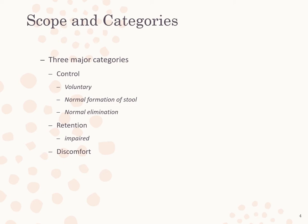Blood enters the kidney through the renal artery, which branches into progressively smaller arteries, arterioles, and finally a cluster of capillaries known as the glomerulus. The glomerulus is a semi-permeable membrane that filters blood into the Bowman's capsule, beginning urine formation. This filtrate contains water, electrolytes, and waste. As it passes through the proximal convoluted tubule, the loop of Henle, and the distal convoluted tubule, surrounding capillaries reabsorb most of the water, electrolytes, and other necessary elements back into the blood — a process called tubular reabsorption.